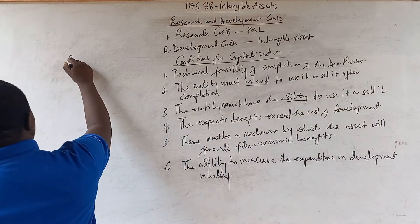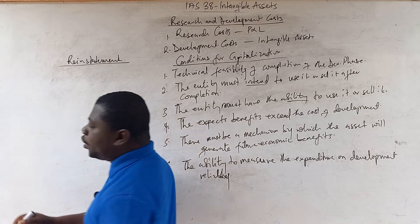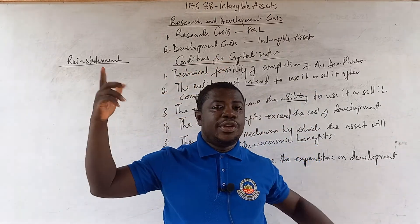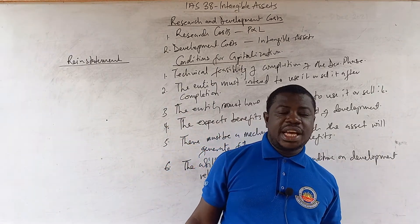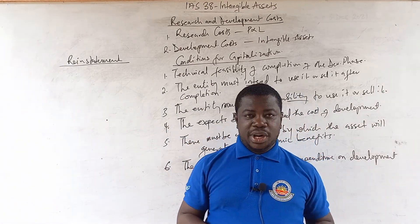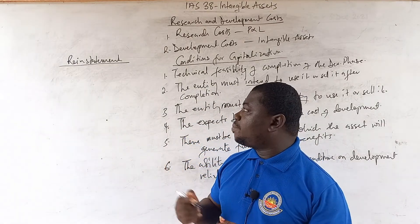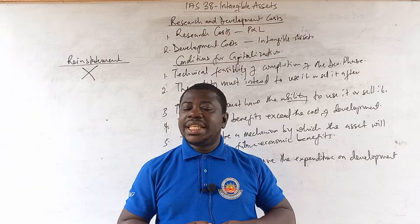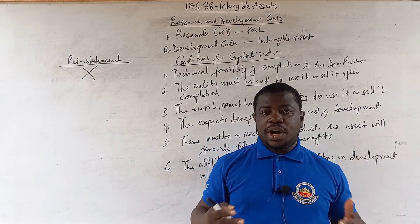There is something called reinstatement. Reinstatement is a situation where development costs that were previously written off as an expense in the profit or loss statement, maybe in a previous year, are in a subsequent year brought back as an intangible asset in the statement of financial position. IAS 38 prohibits this. You do not reinstate an asset that has already been written off as an expense in a previous period.